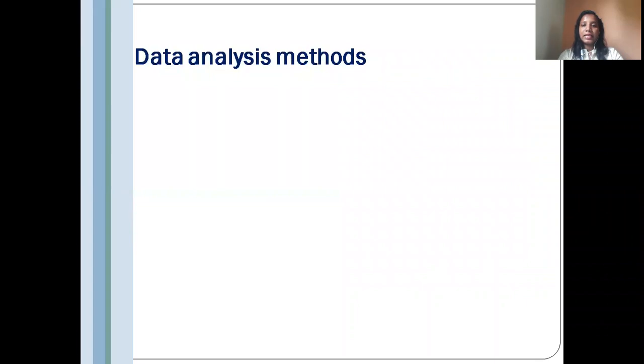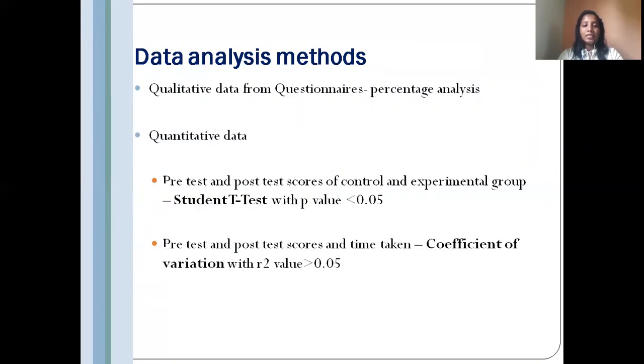The data analysis methods that I have incorporated include, for the qualitative data from the questionnaires, percentage analysis. For the quantitative data, I incorporated student t-tests where the p-value, if it is less than 0.05 from the pre-test and post-test scores from both the control and experimental group, will be considered statistically significant. And the coefficient of variance to build up the relationship between the test scores and the time taken, with an r-squared value greater than 0.05 considered to be statistically significant.